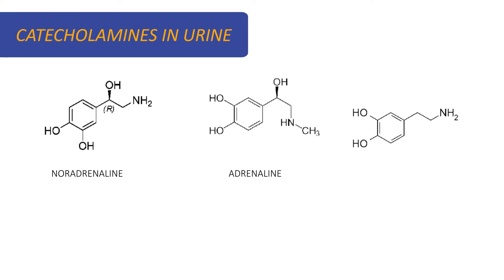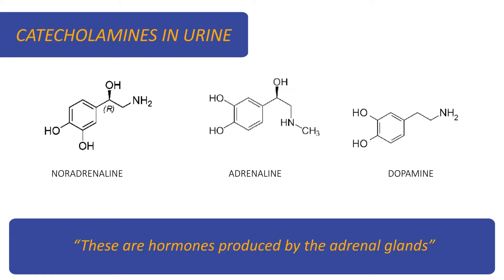So now let's begin with catecholamines in urine: noradrenaline, adrenaline, and dopamine. These are hormones produced by the adrenal gland which greatly increase their concentration in biological fluids in the presence of cancers such as pheochromocytoma, neuroblastoma, or paraganglioma.